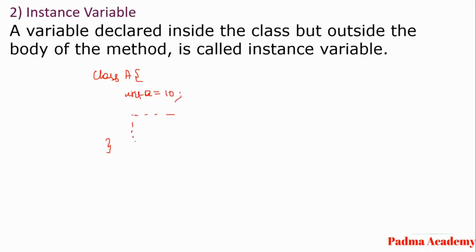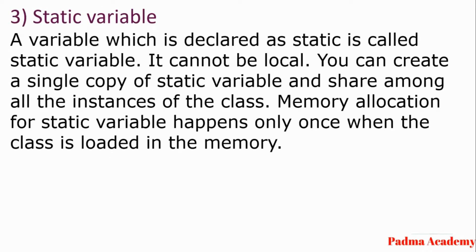This 'a' is an instance variable because it is declared in the class but outside the method. All methods of class A can access the value of variable 'a'. That is all about the instance variable. Next we have the static variable — a variable which is declared as static is called a static variable.